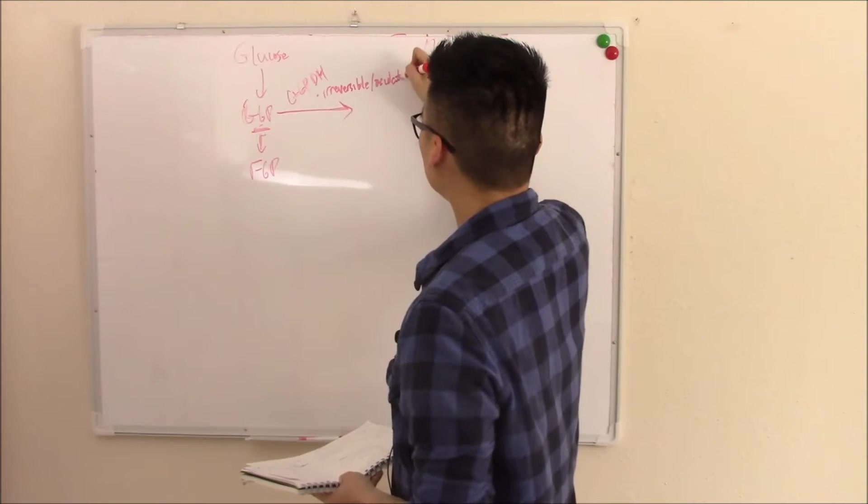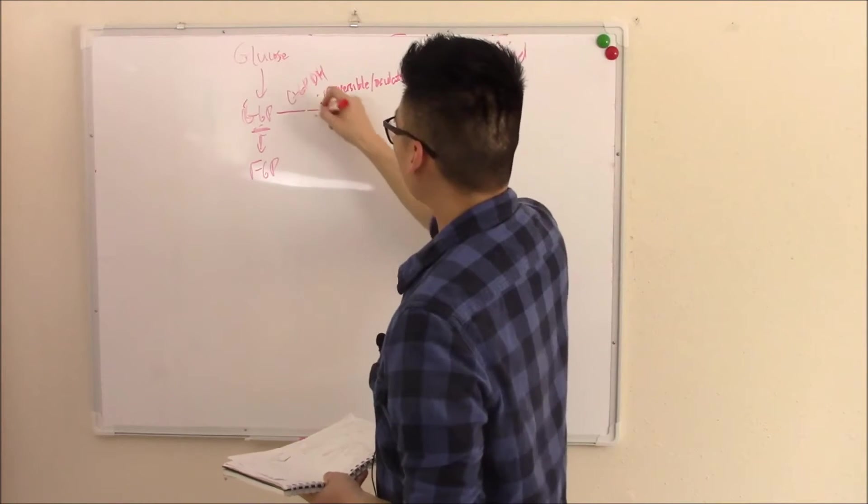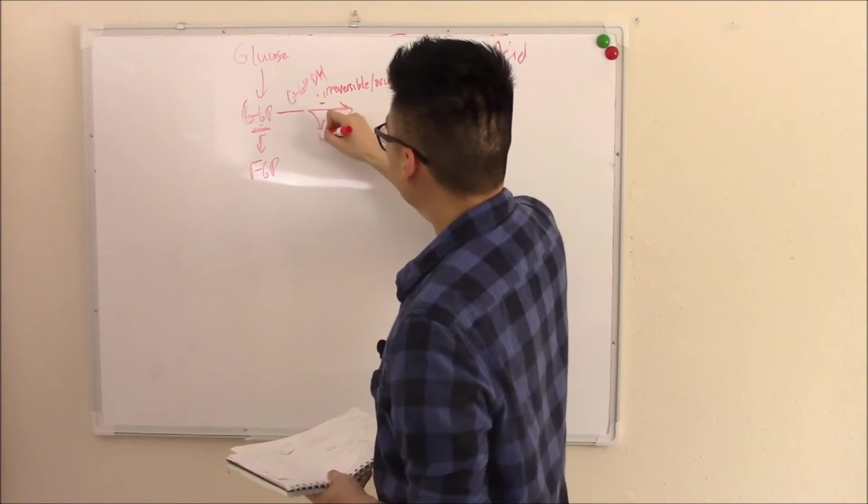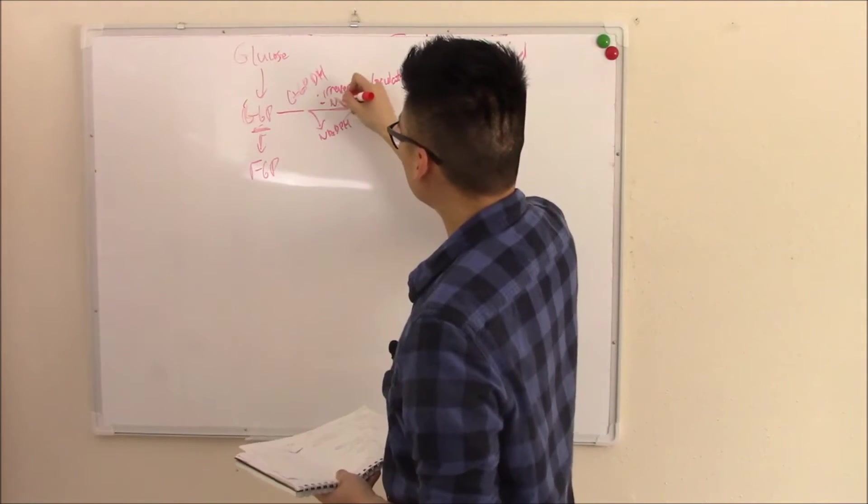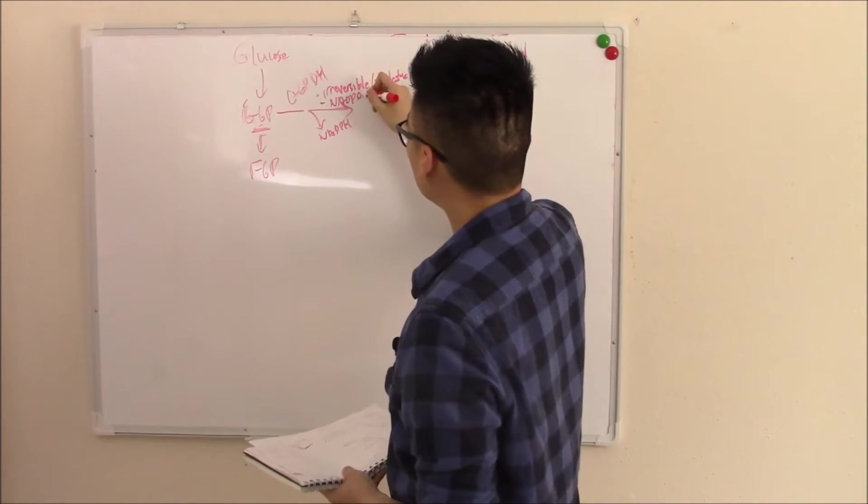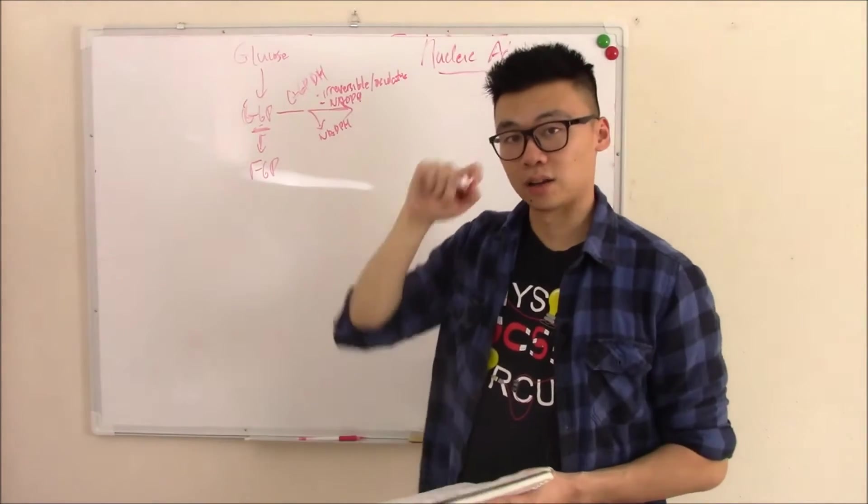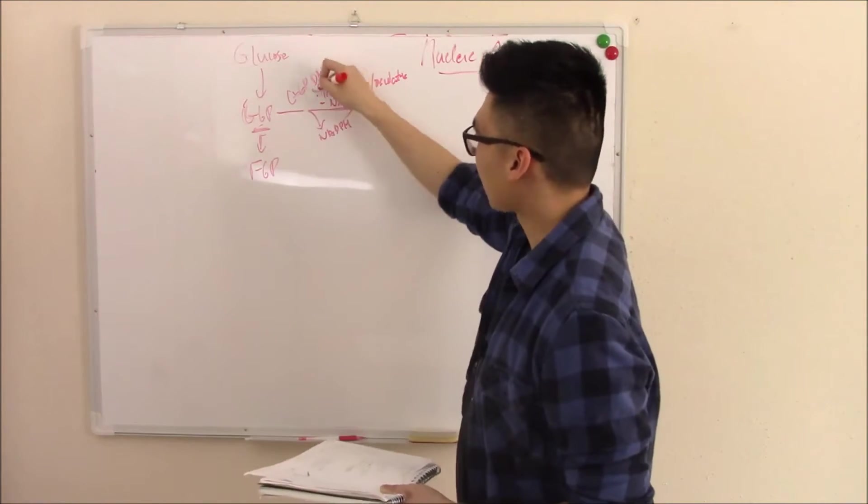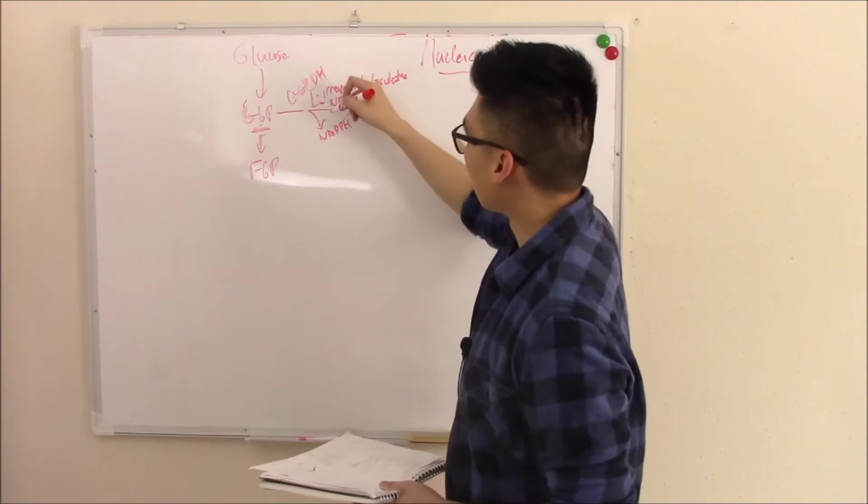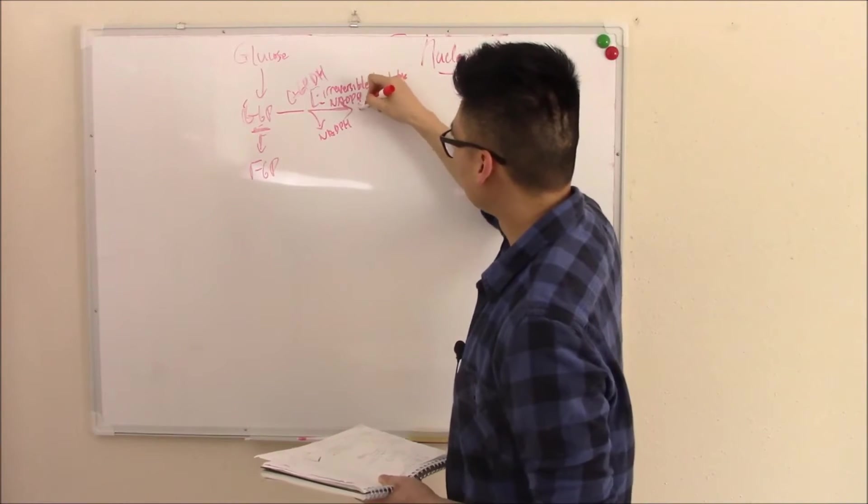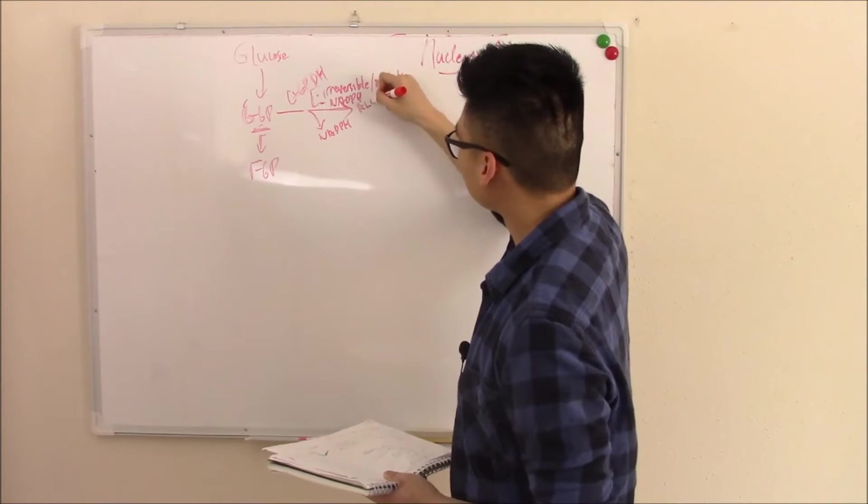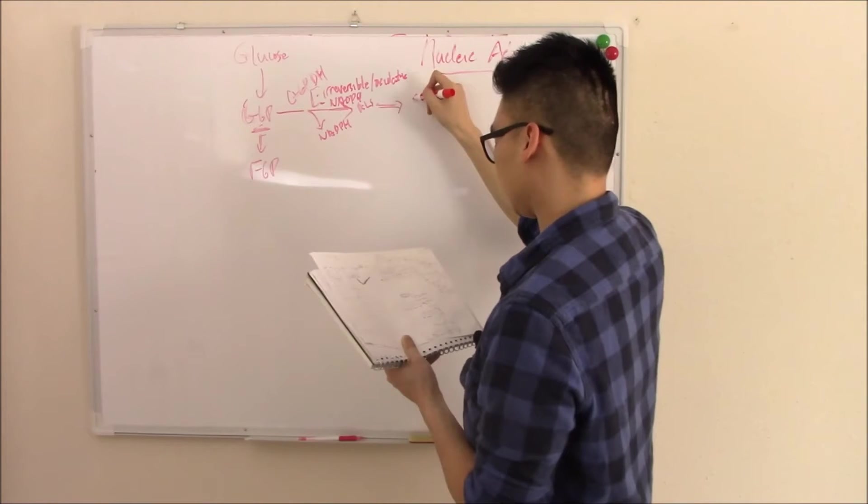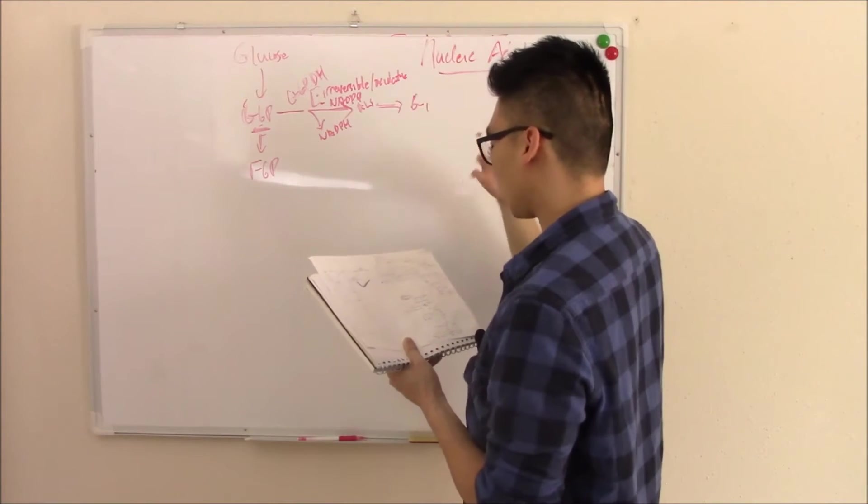A few things you need to know about this: it is oxidative, which means electrons are exchanged. It is irreversible. And also, you create a product called NADPH, which helps neutralize free radicals. We'll talk about this in subsequent videos. And then lastly, it is the rate limiting step.